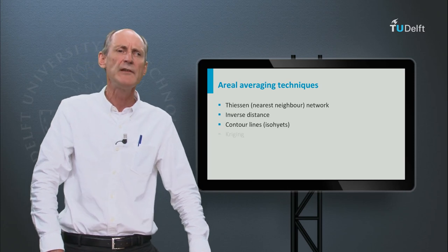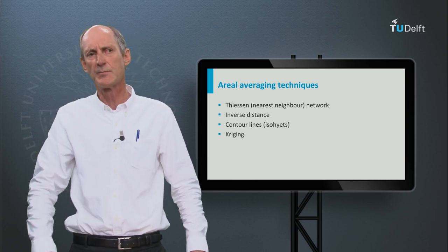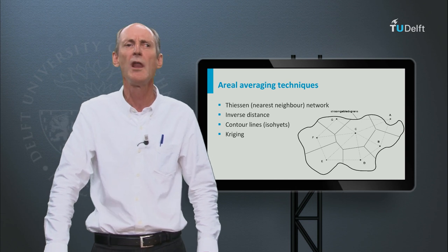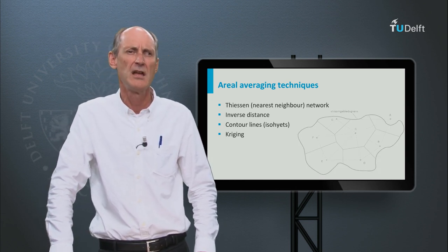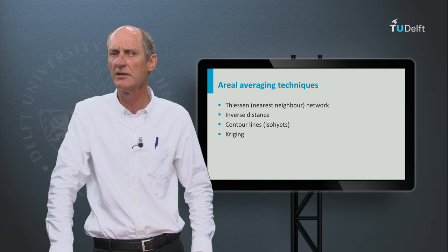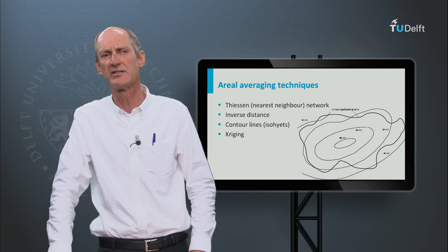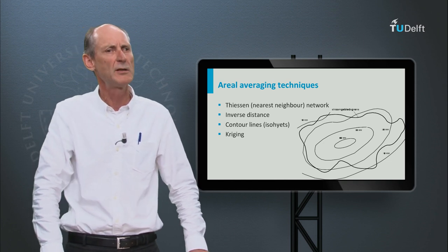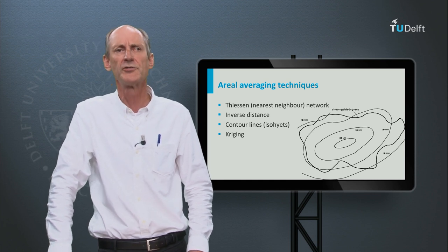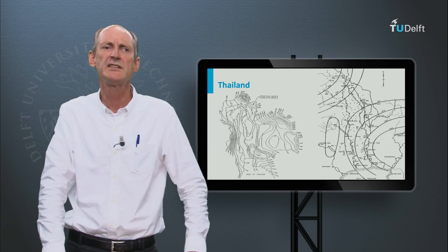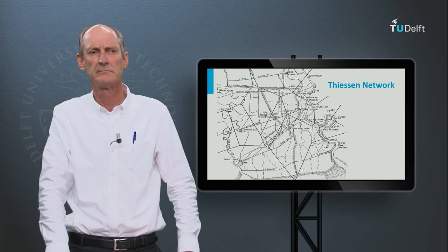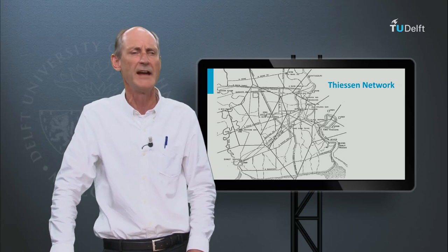Finally, we briefly mentioned four engineering tools used to average precipitation in space. Most common is the Thiessen network, a way to visualise the nearest neighbour. But another way to favour the nearest neighbour is by inverse distance. A more accurate but more elaborate way is using the isohyets, the lines of equal rainfall amount. But more advanced is the use of geostatistics, the so-called kriging method. Here we see some isohyets for Thailand and the Thiessen network for the city of Bangkok.